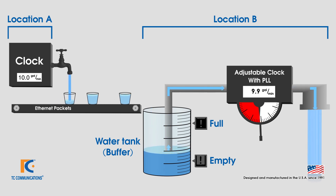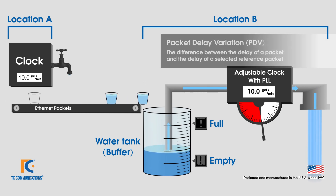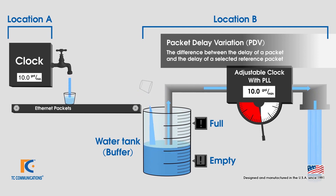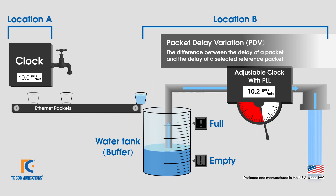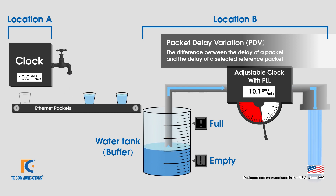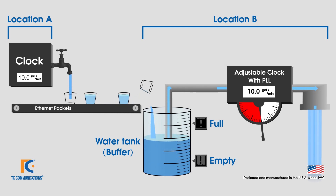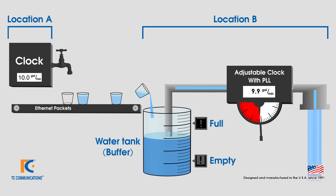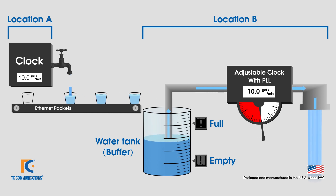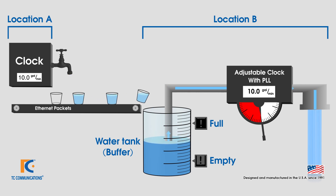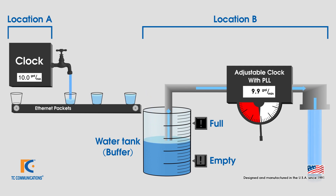The primary cause of changing the flow rate is packet delay variation, which is the variation in delay between packets — shown by larger or smaller gaps between the water buckets in the animation. The use of the buffer, or in this case the water tank, and the output flow variation compensates for the delay variation.